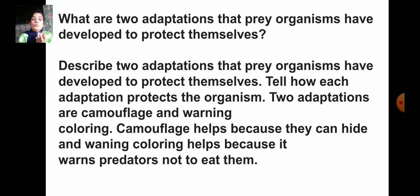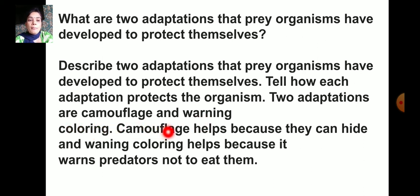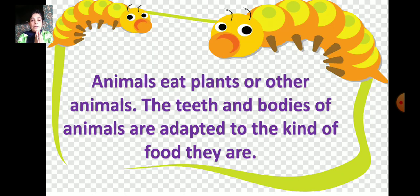What are the two adaptations that prey organisms have developed? One is camouflage and the other is warning coloring. Camouflage helps animals hide, and warning color tells predators not to eat them. Animals eat plants or other animals, and the teeth and bodies of animals are adapted to the kind of food they eat.